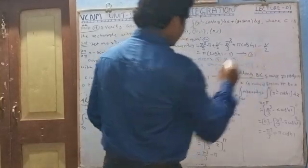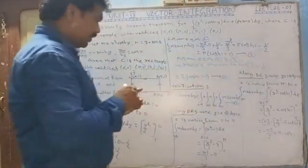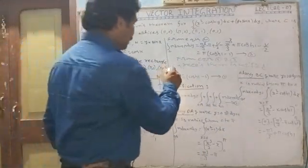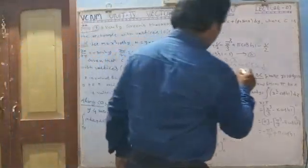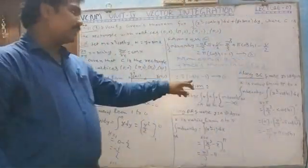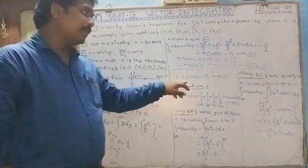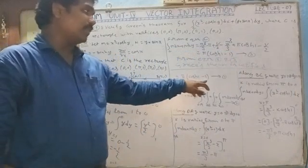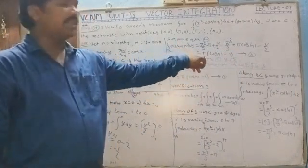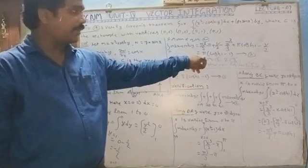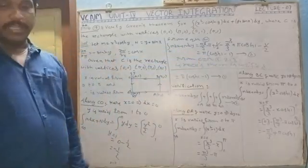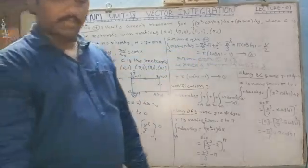From equations 1 and 3, the double integral over R of (∂N/∂x minus ∂M/∂y) dx dy equals π(cosh(1) minus 1), which equals the line integral over C of M dx plus N dy. Both are equal, so Green's theorem is verified.